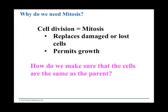Why do we need mitosis? There are many reasons. There are damaged cells — say you get a cut, you've got to replace those cells. Growth: once a sperm and egg unite and you have a fertilized egg, it immediately starts off with mitosis. At the end of nine months you have a trillion-celled baby — from one cell, each cell starts dividing through mitosis. We have to make sure the cells are the same as the parent, and that often causes problems.